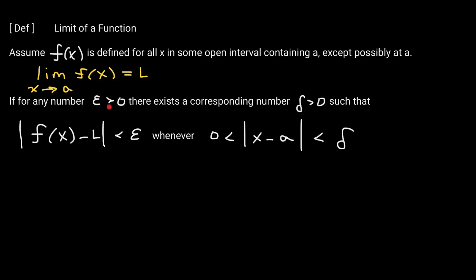This limit is L if you can show that for any number epsilon greater than 0, there corresponds a number delta — another positive number — such that the distance between your function values and L will be less than epsilon whenever the distance between x and a is less than delta. Our job for each problem is to find the delta that corresponds to a given epsilon.